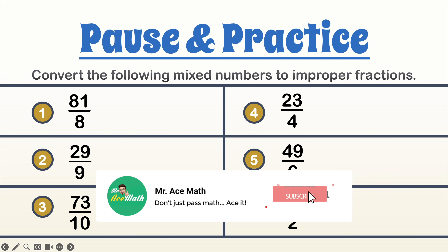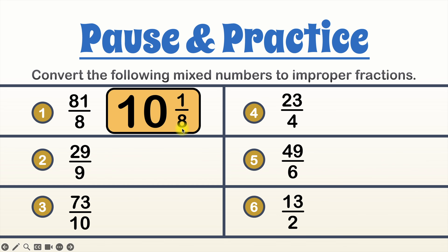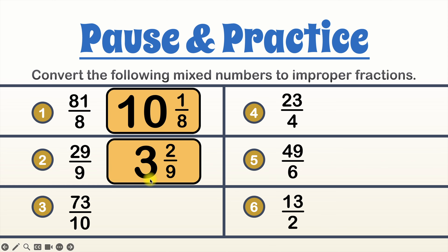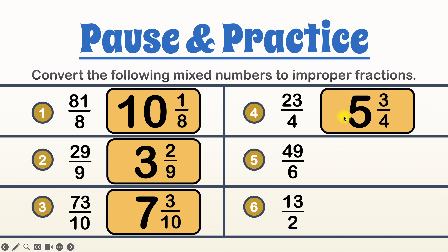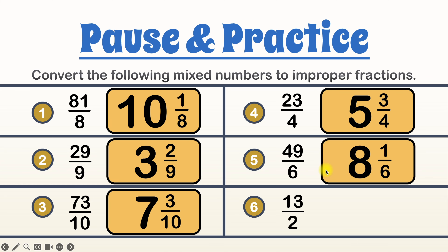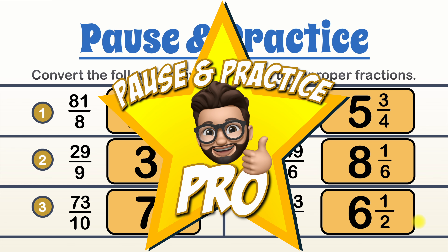Let's take a look at our answers. Number one is ten and one eighth. Number two is three and two ninths. Number three is seven and three tenths. Number four is five and three fourths. Number five is eight and one sixth. And number six is six and one half. So how'd you do, Math Aces? If you got everything right, I want you to write 'pause and practice pro' in the comments, and don't forget to share this with a friend.